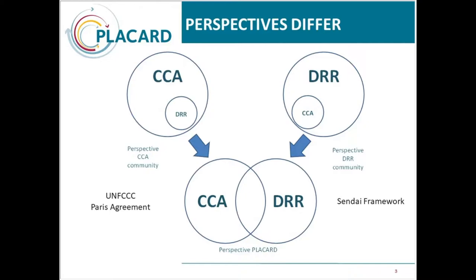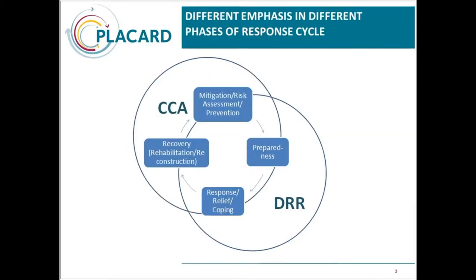In climate change adaptation, the community sees disaster risk reduction maybe as one of their areas of concern — one sector among many others. While people in disaster risk reduction regard climate change adaptation as something in the margin of what they're doing because it's too long term. So we think there is a reason to explore the potential to connect these two communities and find synergies. Both communities also have their own international policy framework: the UN Framework Convention on Climate Change for Adaptation, and the Sendai Framework for Disaster Risk Reduction.